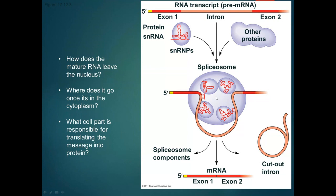The base pairing between the snRNA and the mRNA involves hydrogen bonds — it's complementary base pairing. There's not really a specific spliceosome for every gene. The intron sequences often have very common start sequences that are recognized. We can't leave the nucleus until we complete these processing steps.